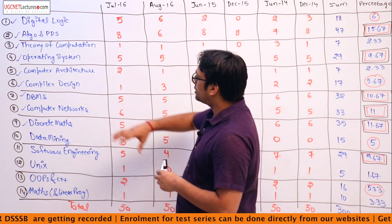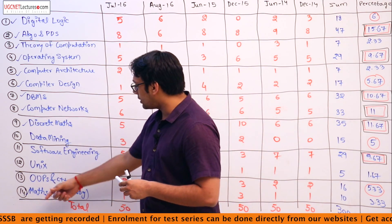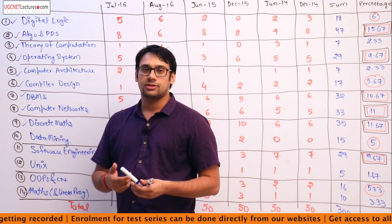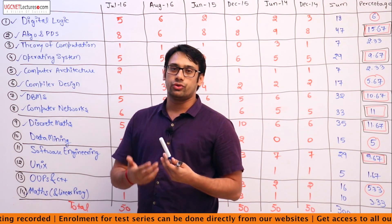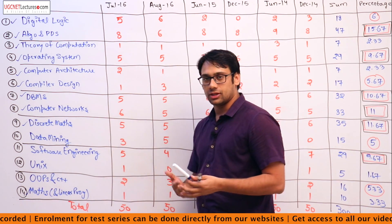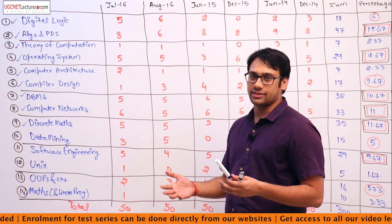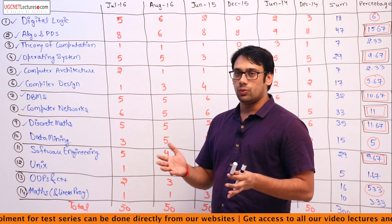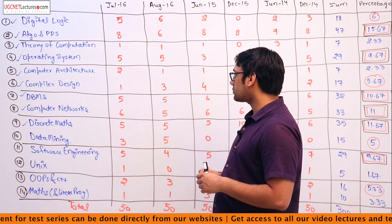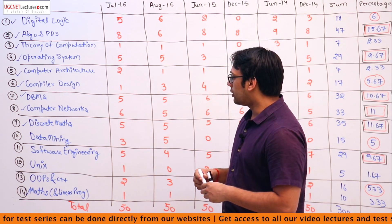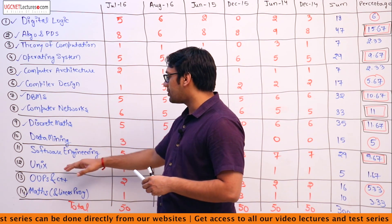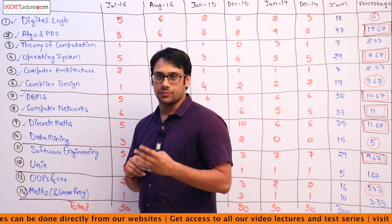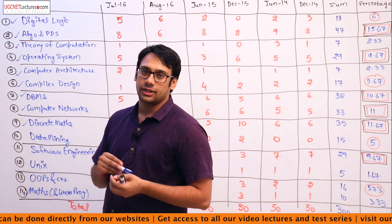In GATE, mathematics is done in more depth compared to UGC examination because in UGC we only have linear programming. The subjects data mining, software engineering, UNIX, and OOPS and C++ are not present in the GATE examination.